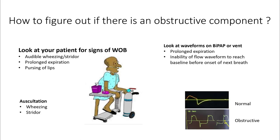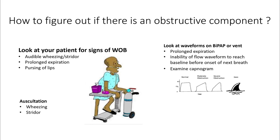You can also look at waveforms on the BiPAP or ventilator and see prolonged expiration. On the flow waveform, an inability to reach baseline before the next breath indicates auto-PEEP or air trapping — in normal breathing the waveform reaches zero, while in obstruction it does not. You can also examine the capnogram: the alpha angle slowly increases, the slope of phase 3 increases, and in severe obstruction the capnogram looks like a shark fin.